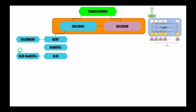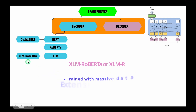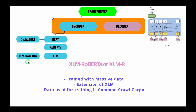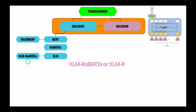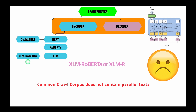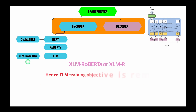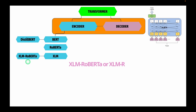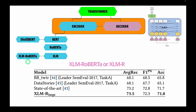The next encoder-only architecture is XLM-RoBERTa, also called XLMR. It is an extension of XLM that incorporates massive training data. To train XLMR, the Common Crawl corpus is used, which does not contain parallel text. Hence, the TLM or Translation Language Modeling objective used in XLM was removed. Notably, XLMR beats XLM and even BERT by a huge margin in different tasks, especially those including low-resource languages.